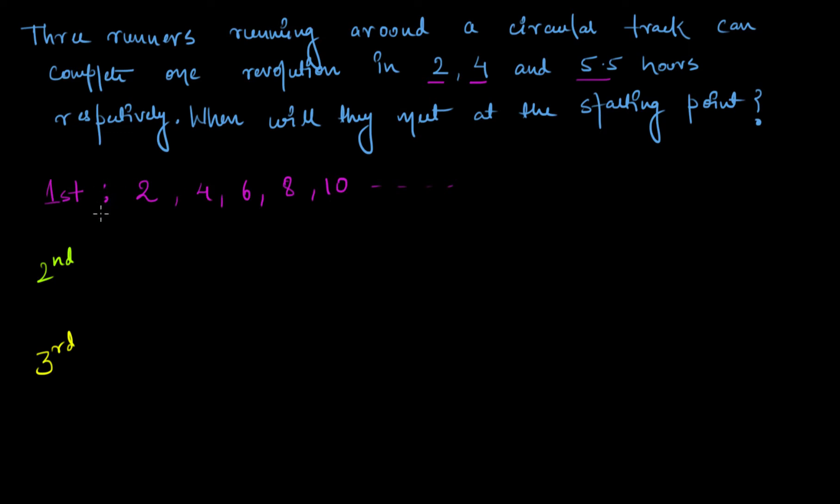Similarly, the second runner completes the first revolution in 4 hours, and then again in 8 hours, then 12 hours, then 16 hours, then 20 hours, then 24 hours, and so on.